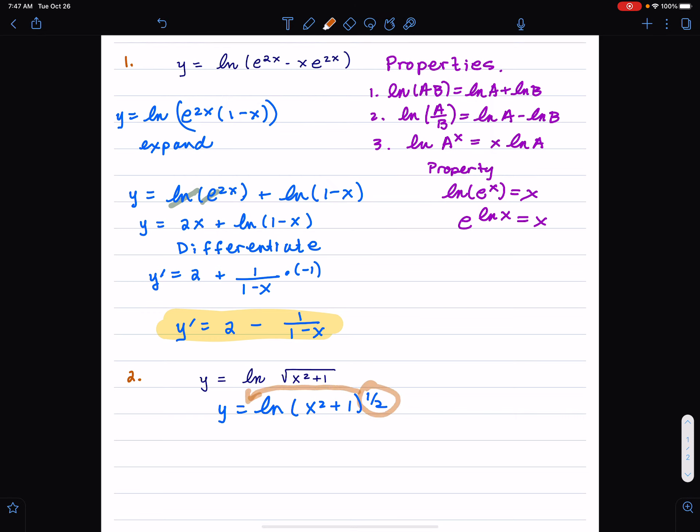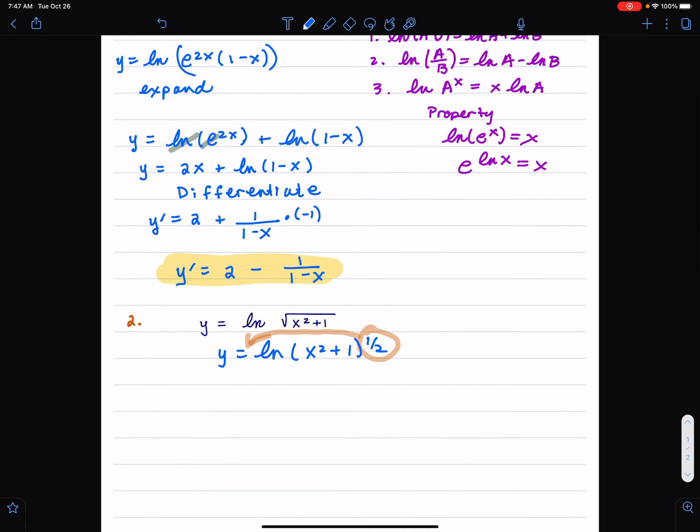You bring the half to the front. And it just makes it easier if we do that. So I'm going to get, anyway, that's one of our properties. That's our third property over here, is that if I have an exponent, it comes to the front. So I get y = (1/2)ln(x²+1). And then when we differentiate...